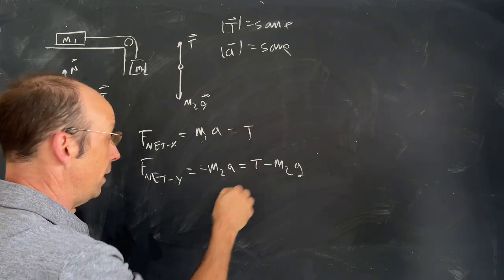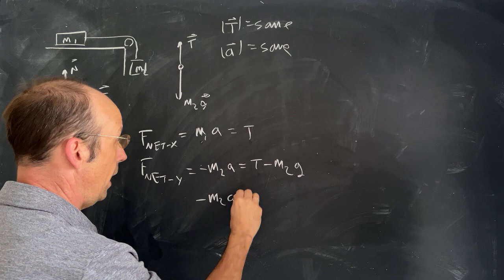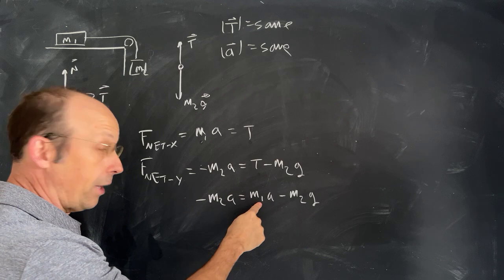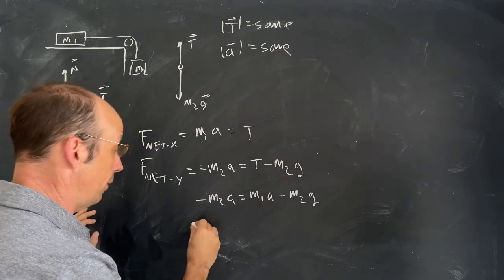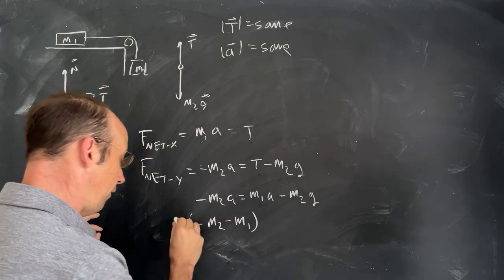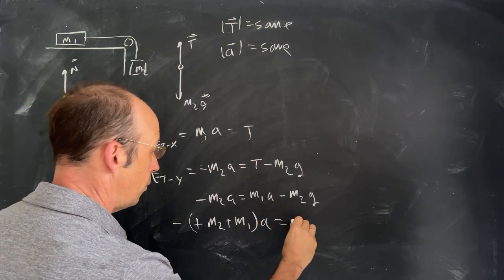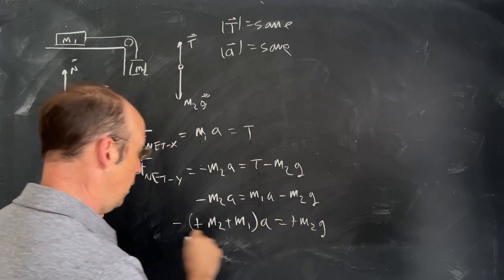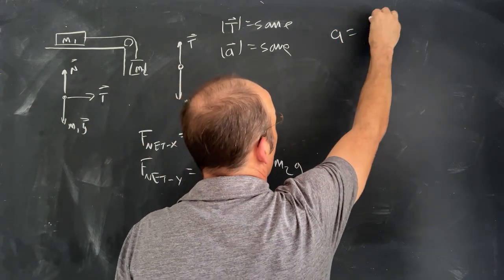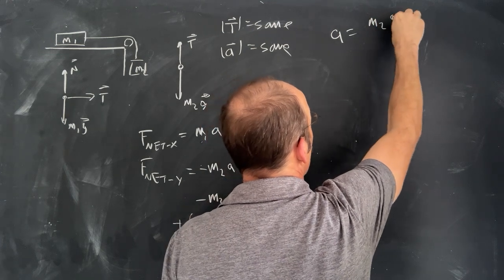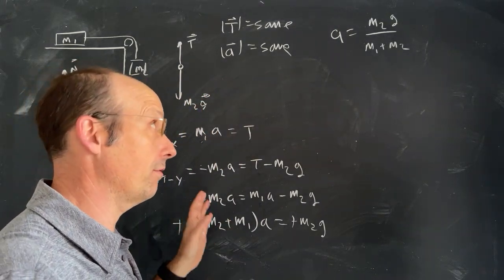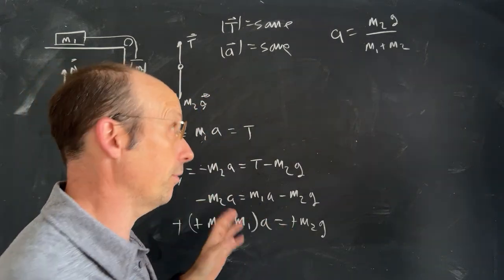Let's substitute T from the first equation: negative M2·a = M1·a − M2·g. Factoring out the negative and rearranging, the negatives cancel and dividing both sides by (M1 + M2) gives a = M2·g / (M1 + M2). That's a standard Newtonian mechanics result — nothing too surprising.